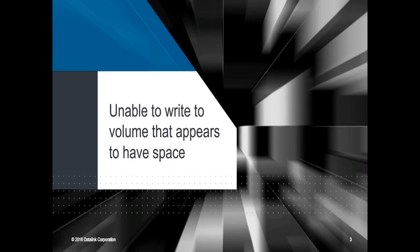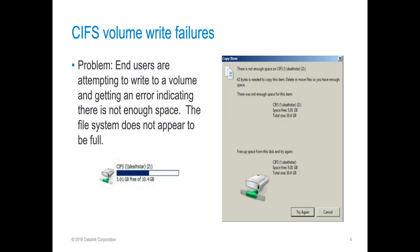The first issue I want to discuss is when a user is unable to write to a volume that is showing available space. Here we have an end user who called in stating that they were attempting to copy a file to their share. However, an error came up indicating that there is not enough space. From Windows Explorer, we see that there is plenty of space, and the error message itself showing the space free value appears to have enough room to contain the file.